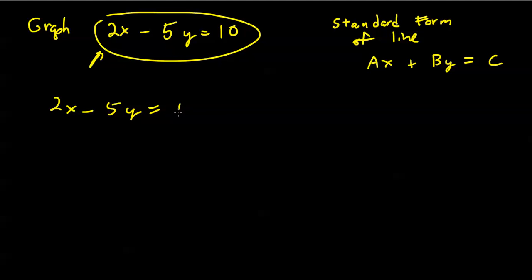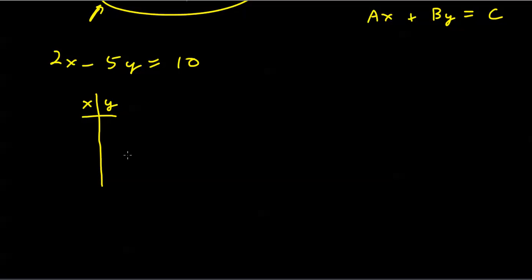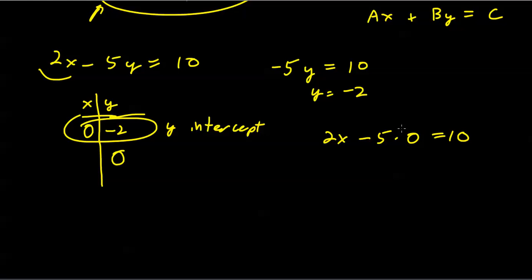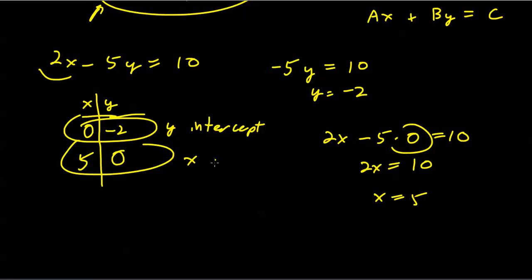2x − 5y = 10. I'll use the intercepts to graph this. If x = 0, the 2x term falls away, leaving −5y = 10, so y = −2. That's the y-intercept. For the x-intercept, let y = 0: 2x − 5(0) = 10, giving 2x = 10, so x = 5. When y = 0, x = 5 — that's the x-intercept.